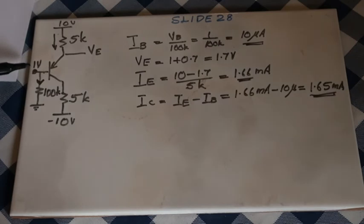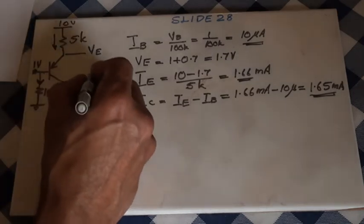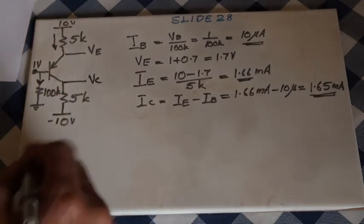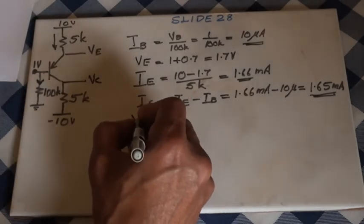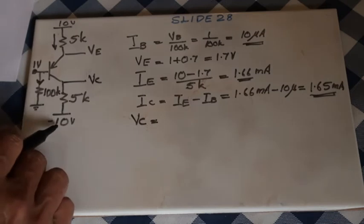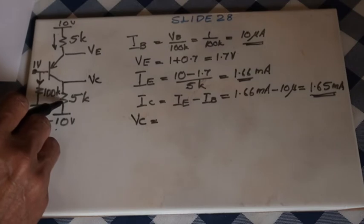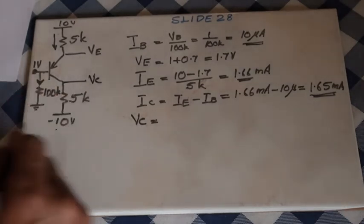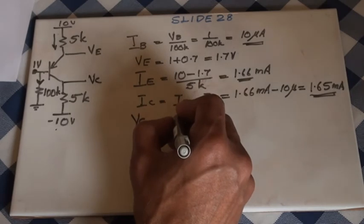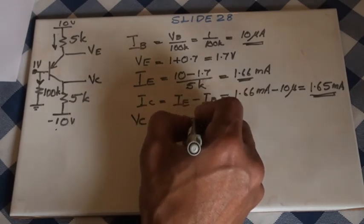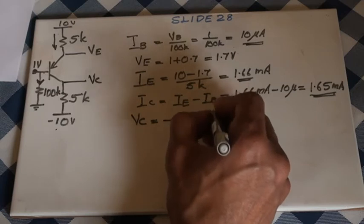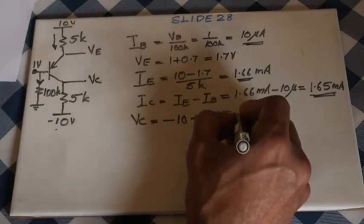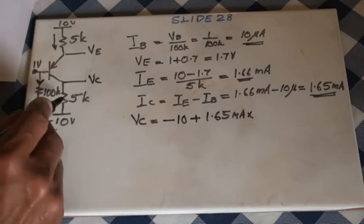We found voltage at the base - 1 volt given. Voltage at the emitter - we found it. Now this voltage is the voltage at the collector. How do you find voltage at the collector? Negative supply voltage plus collector current multiplied by 5K. That is negative 10 plus 1.65 milliamperes multiplied by 5K, which equals negative 1.75 volts.